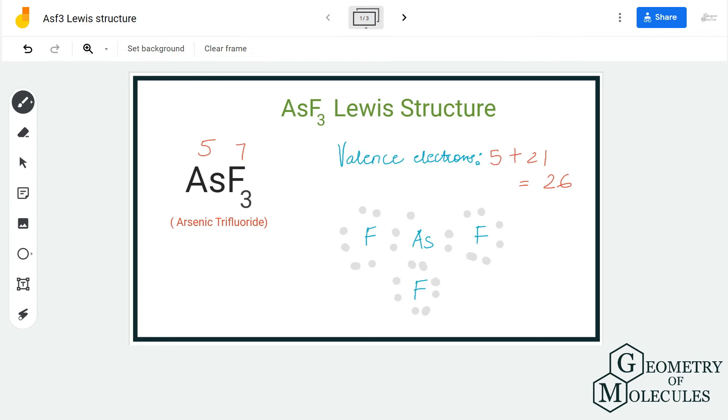These two electrons will be placed on the arsenic atom because it can have two more electrons to complete its octet. After doing that, we have used up all our valence electrons, all 26 of them, and there are complete octets for each atom in this structure.